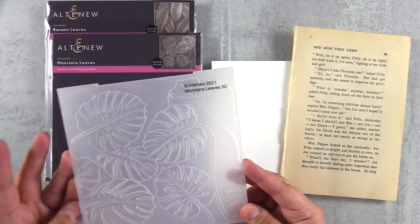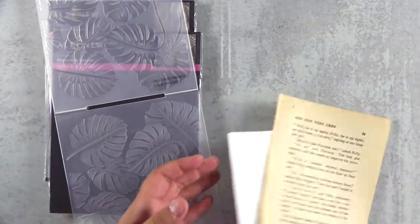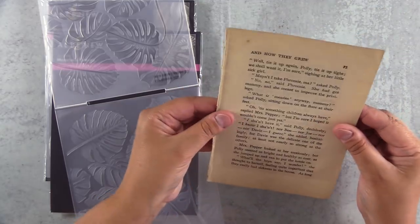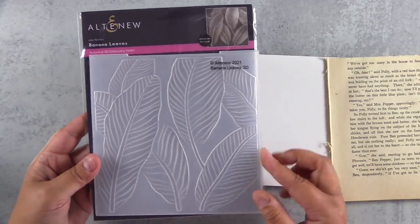I have the Monstera Leaves and Banana Leaves 3D embossing folders here and I wanted to come up with a different way to use them that goes above and beyond just ink blending or even watercoloring on them.